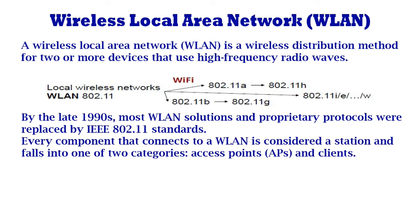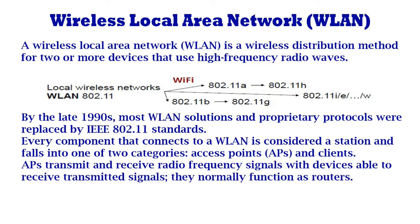Every component that connects to a WLAN is considered a station and falls into one of two categories: Access Points (APs) and Clients. APs transmit and receive radio frequency signals with devices able to receive transmitted signals, and they normally function as routers.